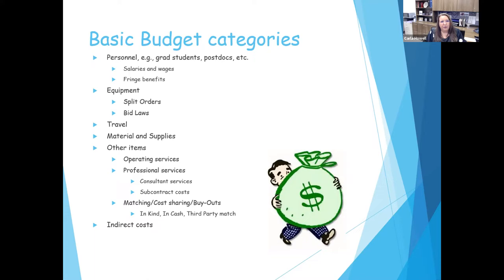Professional services is something that you'll see a lot of. You'll have consultants and evaluators that you bring in, and universities handle these in different ways. If you've got professional service contracts, there are certain guidelines you have to follow — over $2,000, over $5,000, depending on the type of service. There's sometimes a gray area between what's considered an operating service and a professional service. If it's an individual that's going to have to get a 1099, that's going to go through a professional services contract depending on the nature of the work.